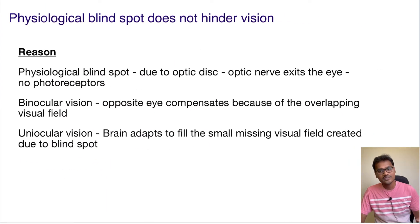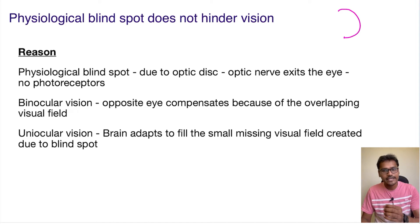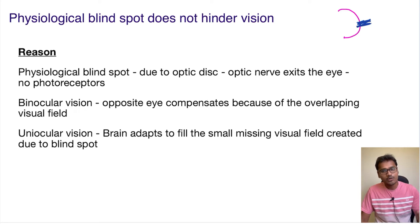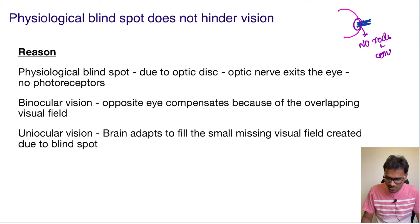So first of all, what is the physiological blind spot? Whenever you talk about an eyeball, there is one region where the optic nerve exits the eyeball. Let's take this region where the optic nerve is exiting. Since the optic nerve is exiting this region, there will be an absence of photoreceptors — basically no rods and cones. If there are no rods and cones, can they form a visual image in this region?